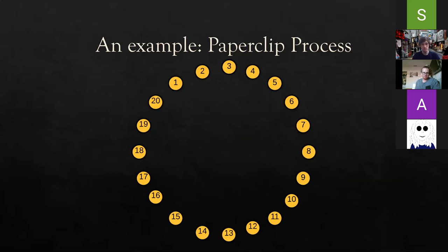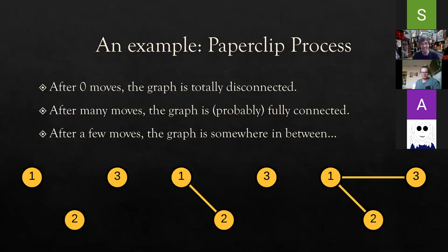There's a question in the chat: if you roll the same number twice, do you draw the edge twice? No — in this case you only consider distinct pairs of points. If you drew an edge to itself, that's not an interesting case. If you get the same pair twice and the edge is already drawn, you don't need to draw the additional edge. We're just interested in connecting the points, not in the number of edges or loops. So yes, it's unweighted, undirected, and simple.